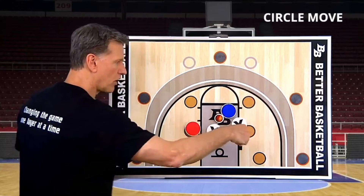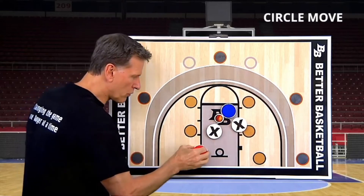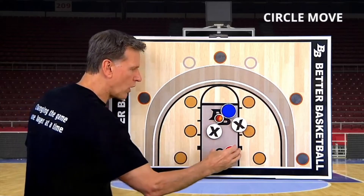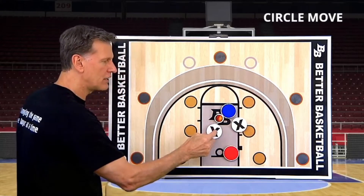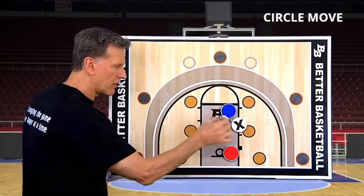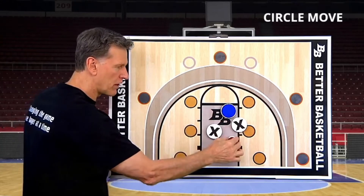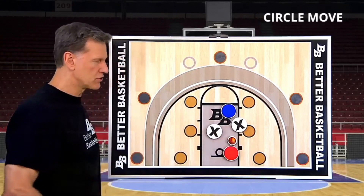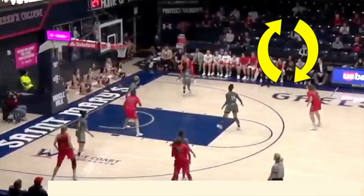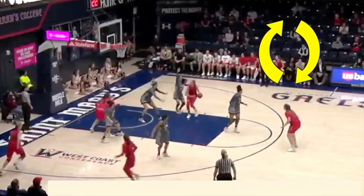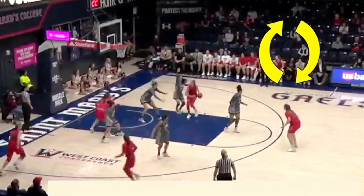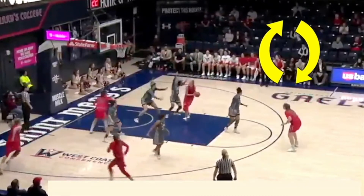They drove right, therefore you move to your right, and you wind up back cutting your defender — there's an opening there for you to catch and score. I've placed two arrows on the screen that denote the direction of the drive, which signals the way the post should circle.